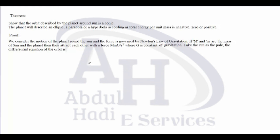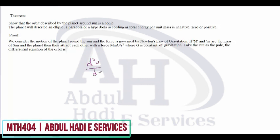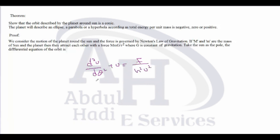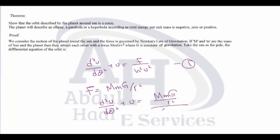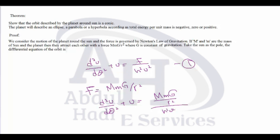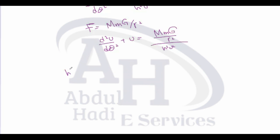The differential equation of the orbit is: d²u/dθ² + u = f / (h² u²). Now we put f = M·m·G / r² into equation 1. This becomes d²u/dθ² + u = M·m·G / r², divided by h²/u², so this simplifies to d²u/dθ² + u = M·m·G·u² / h², which we write as mu over h squared.